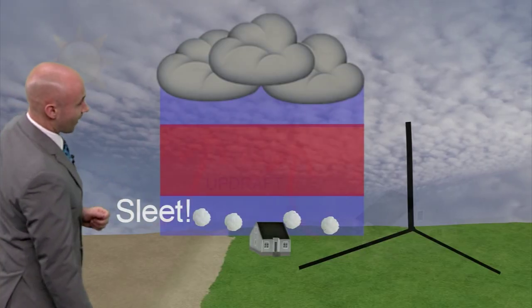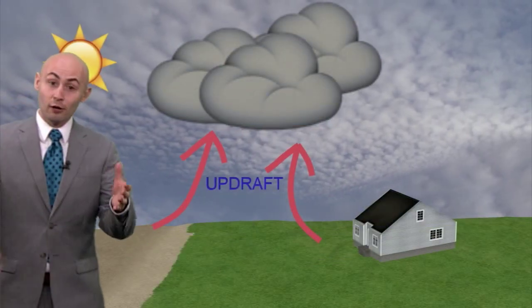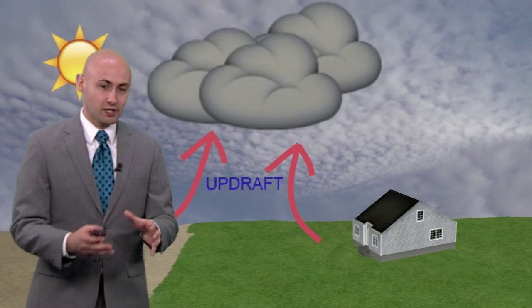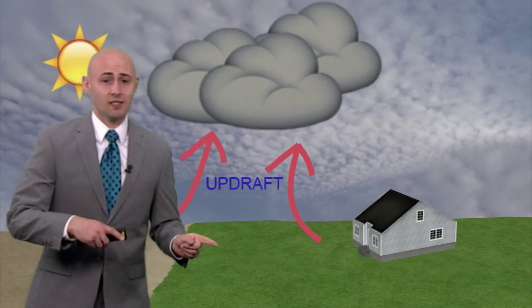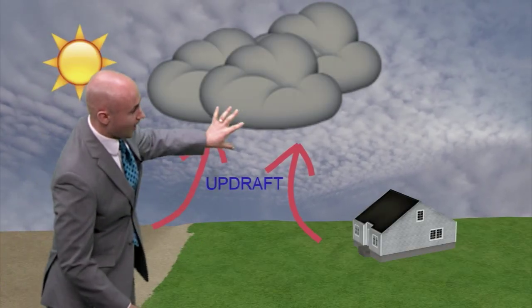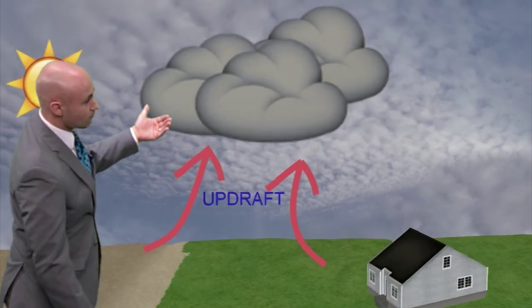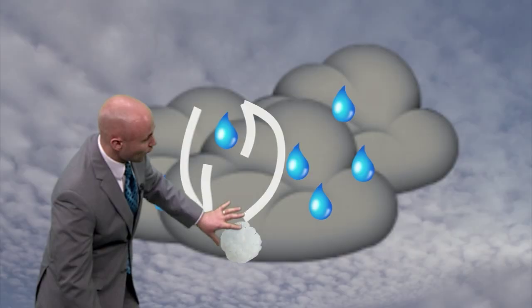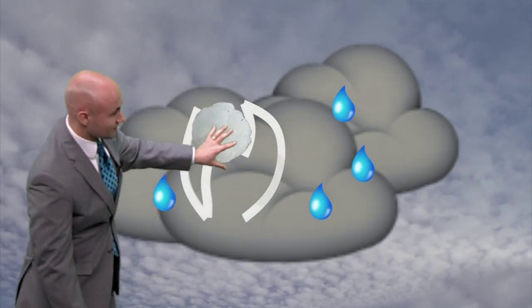What we also have is hail — once again, a frozen type of precipitation, but this is in the summertime. We have a strong updraft that really brings water molecules really high in the atmosphere — you're talking six or seven miles up. By then, these water droplets are frozen, and what you see is frozen molecules collect other raindrops, start to get a little bigger, gravity takes hold, and it drops that hailstone.